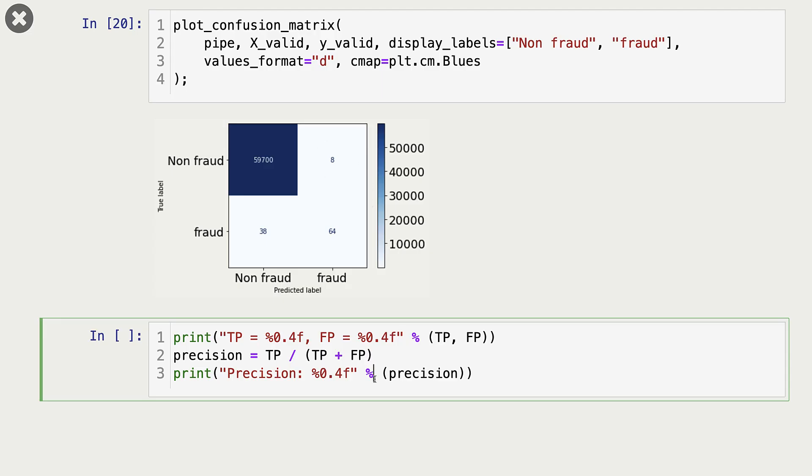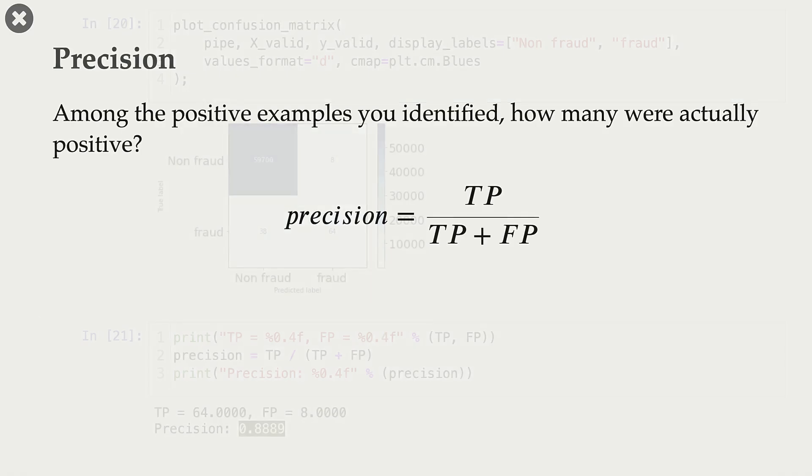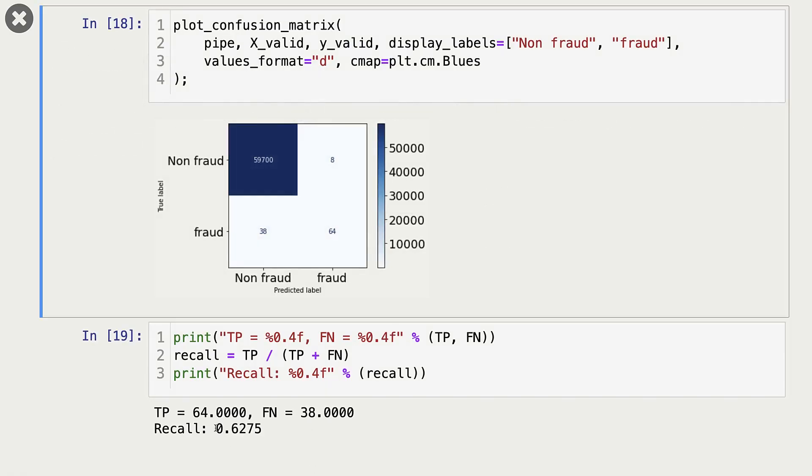So our precision is going to be 64 over 64 plus 8, which is 0.8889. So logistic regression is giving a reasonable precision score of 0.8889, but kind of a low recall score in this particular case.